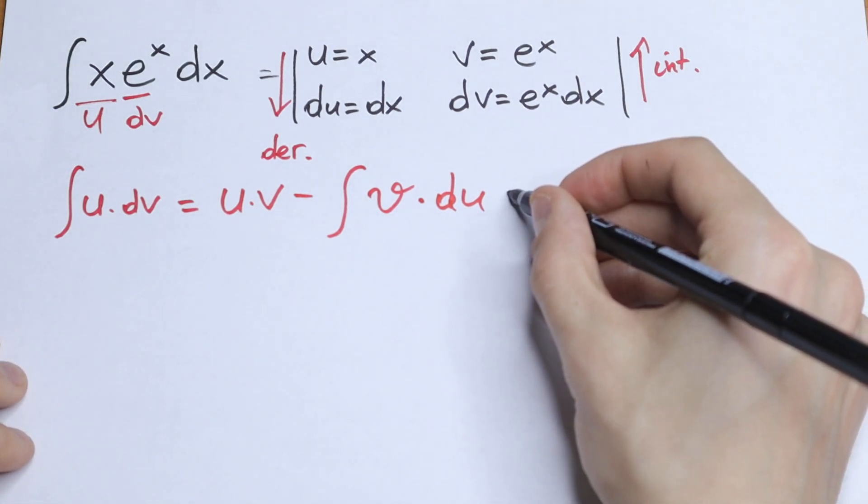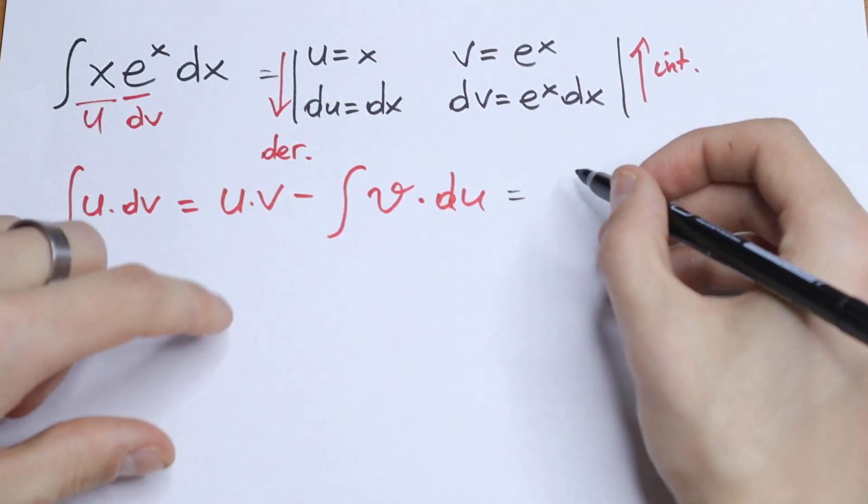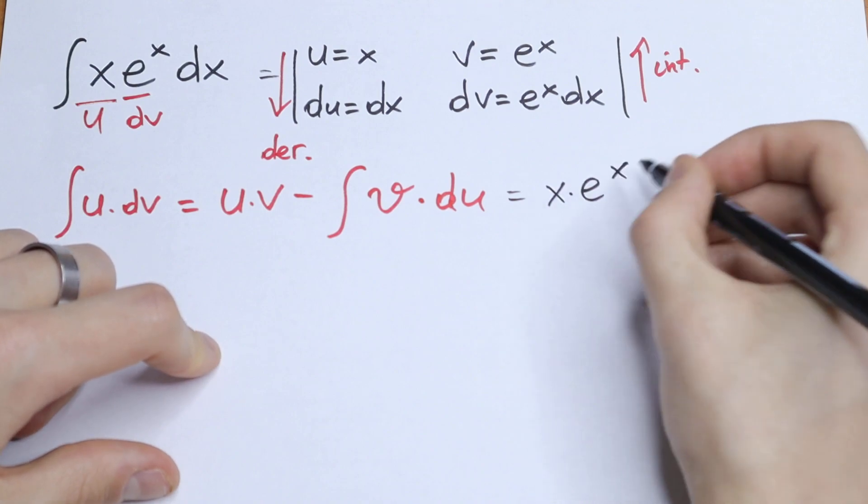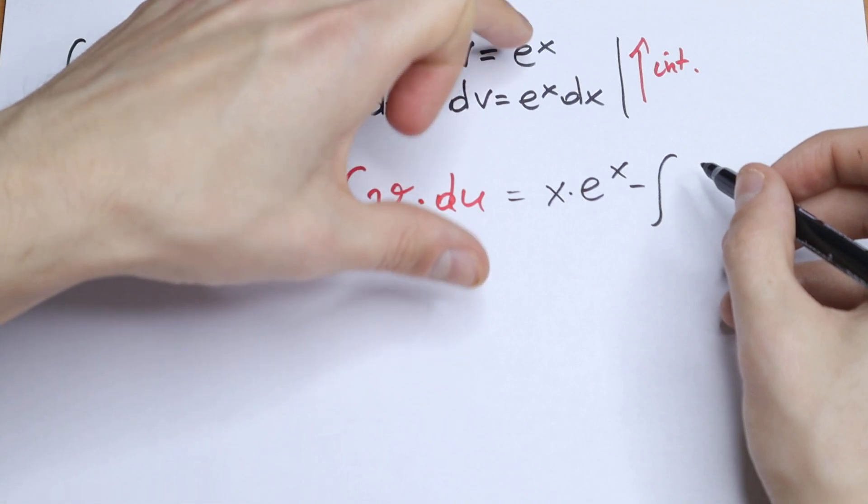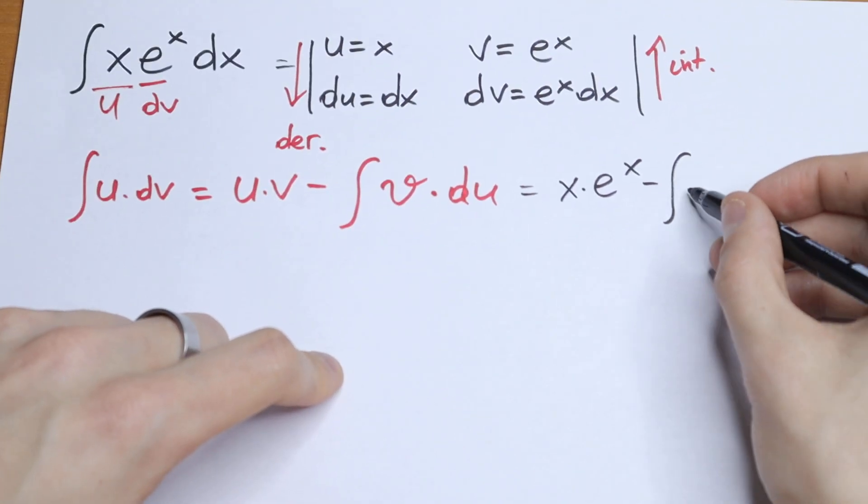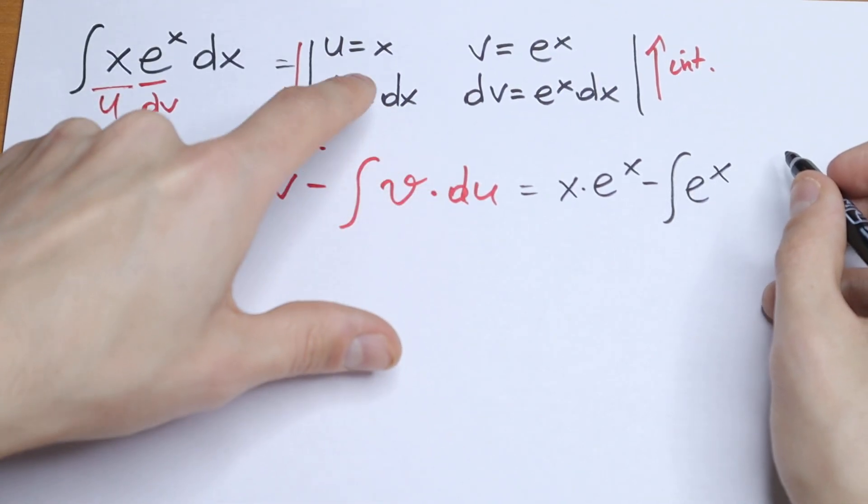So this will be equal to u times v, so x times e to the power x, minus the integral of v times du, which is e to the power x times dx.